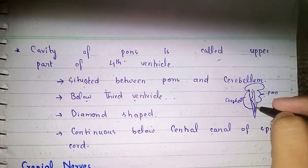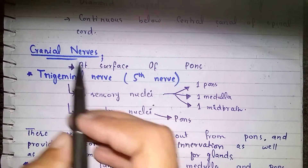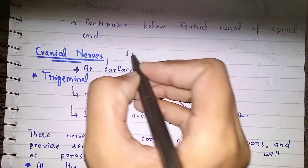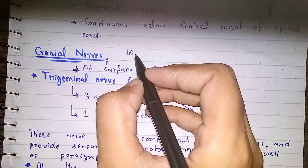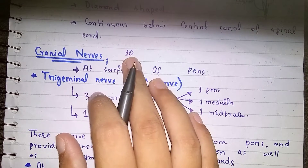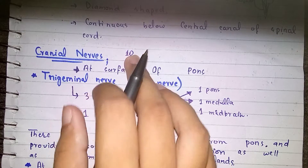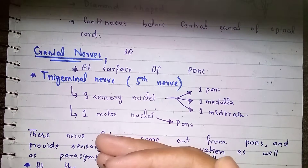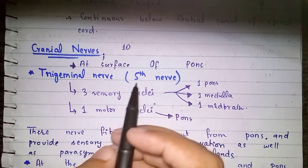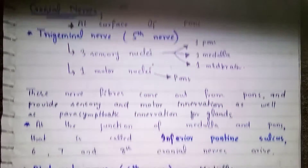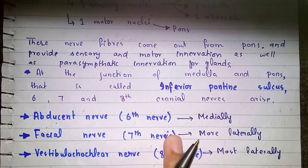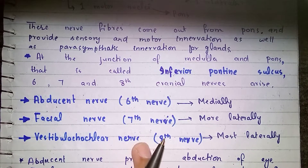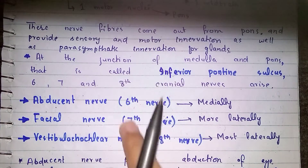Now we will discuss the cranial nerves in PONS. Our brain has 12 cranial nerves total, but if we talk about the brain stem, it contains 10 cranial nerves. Within those 10, the 5th, 6th, 7th, and 8th cranial nerves are present within our PONS. The 5th nerve is the trigeminal nerve, the 6th is the abducent nerve, the 7th is the facial nerve, and the 8th is the vestibulocochlear nerve.